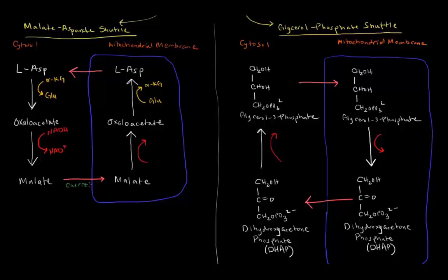So it carries the electrons from the NADH into the mitochondria. Now once the malate is inside, it can actually be oxidized into oxaloacetate. And when it's oxidized, something else has to be reduced. The thing that's reduced here is NAD+ to NADH.